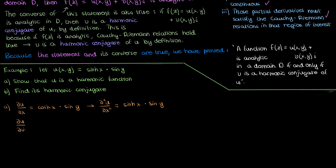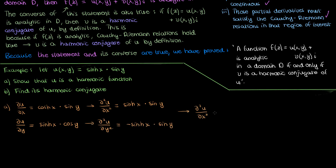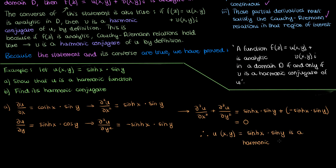Taking the partial of u with respect to y, we just differentiate sine y, and the derivative of sine is cosine. Similarly, taking the second partial of u in y gives the following. Adding these two second partials totals out to zero, confirming that u is indeed a harmonic function because it satisfies Laplace's equation.